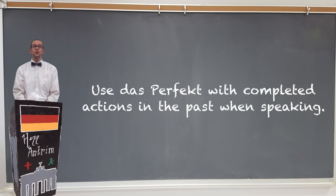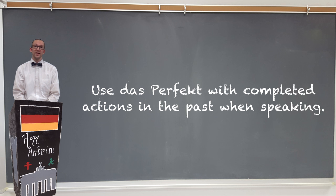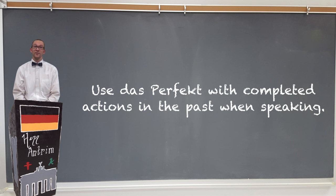Generally speaking, this tense is used whenever you are speaking about something that has already occurred in the past. There's an important distinction to be made here between the English present perfect tense and das Perfekt, because in English the present perfect tense is used to talk about things that started happening in the past and are now continuing into the present — as in, 'I have been living here for five years.' Das Perfekt auf Deutsch, however, is used only with things that are already done in the past.